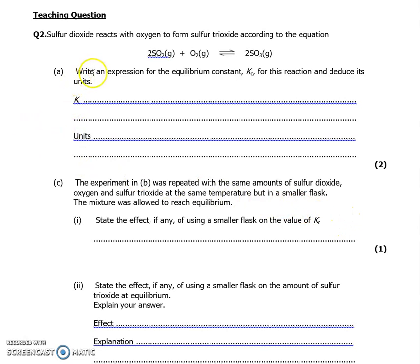So an example here would be writing an expression for the equilibrium constant, Kc, for this reaction, deduce its units. So it would be Kc would be equal to the concentration of your products divided by the concentration of your reactants. That's SO3 squared divided by SO2 squared multiplied by the concentration of oxygen. And then the units would be, because the two squared terms cancel down, then your units would be mol to the minus 1 dm to the power 3.